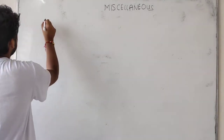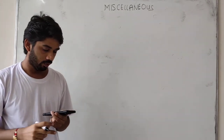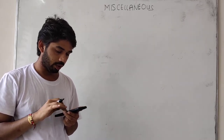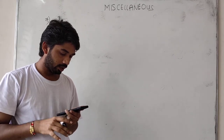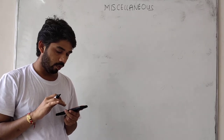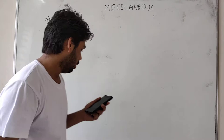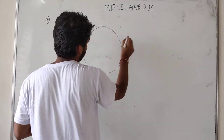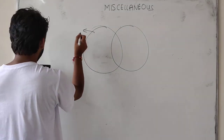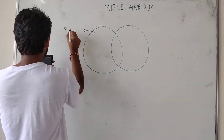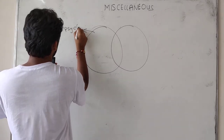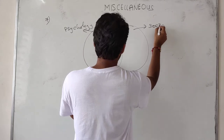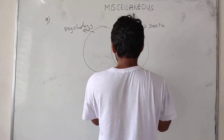Next is question number 7. In a class of students in their final year, 32 students are studying physiology, while a certain number of students are studying sociology. If 16 students have taken both subjects, what is the total strength of the class? We have to find the strength of the class. I will take two subjects: physiology and sociology.